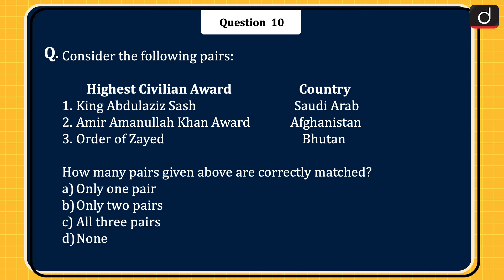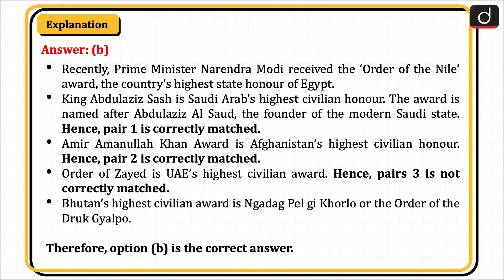Last question: Consider the following pairs — highest civilian award and country. 1. King Abdulaziz Sash — Saudi Arabia. 2. Amir Amanullah Khan Award — Afghanistan. 3. Order of Zayed — Bhutan. How many pairs are correctly matched? The correct answer is Option B, only two pairs. Recently, PM Narendra Modi received the Order of the Nile, Egypt's highest state honor. King Abdulaziz Sash is Saudi Arabia's highest civilian honor, named after Abdulaziz Al Saud, founder of the modern Saudi state — hence Pair 1 is correctly matched. Amir Amanullah Khan Award is Afghanistan's highest civilian honor — hence Pair 2 is correctly matched. Order of Zayed is UAE's highest civilian award, not Bhutan's — hence Pair 3 is not correctly matched. Bhutan's highest civilian award is the Nagadak Pelgi Khorlo, or the Order of the Druk Gyalpo. Therefore, Option B is the correct answer.